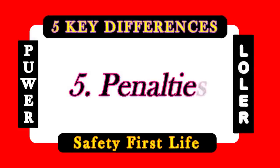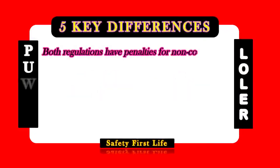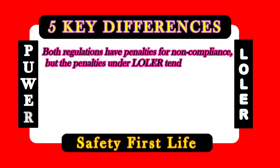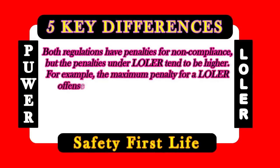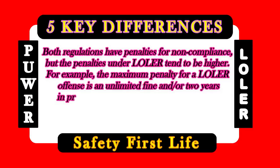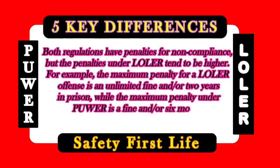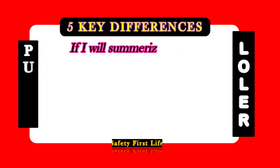Difference 5: Penalties. Both regulations have penalties for non-compliance, but the penalties under LOLER tend to be higher. The maximum penalty for a LOLER offense is an unlimited fine and/or two years imprisonment, while the maximum penalty under PUWER is a fine or six months imprisonment.